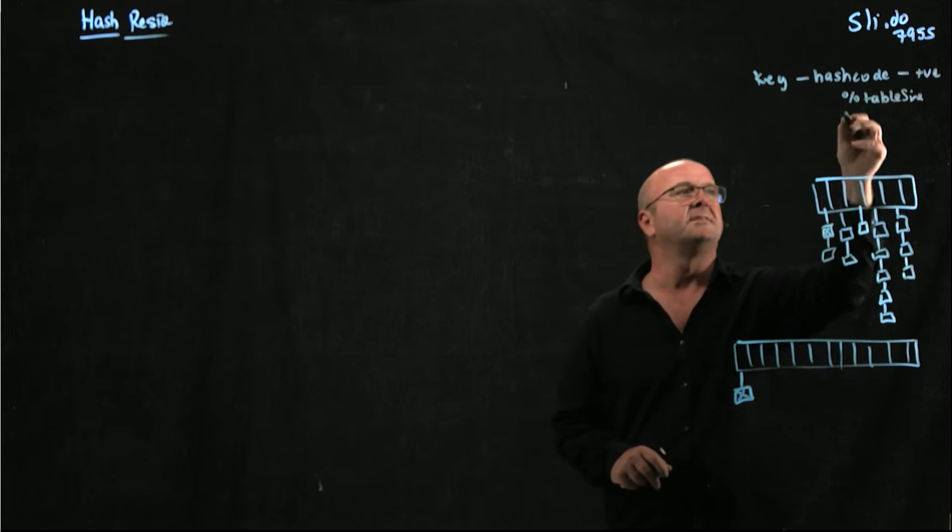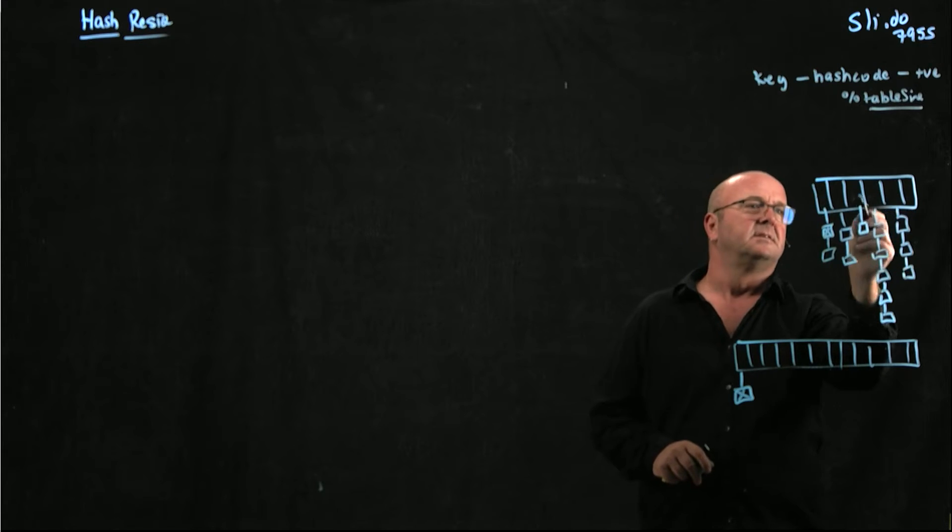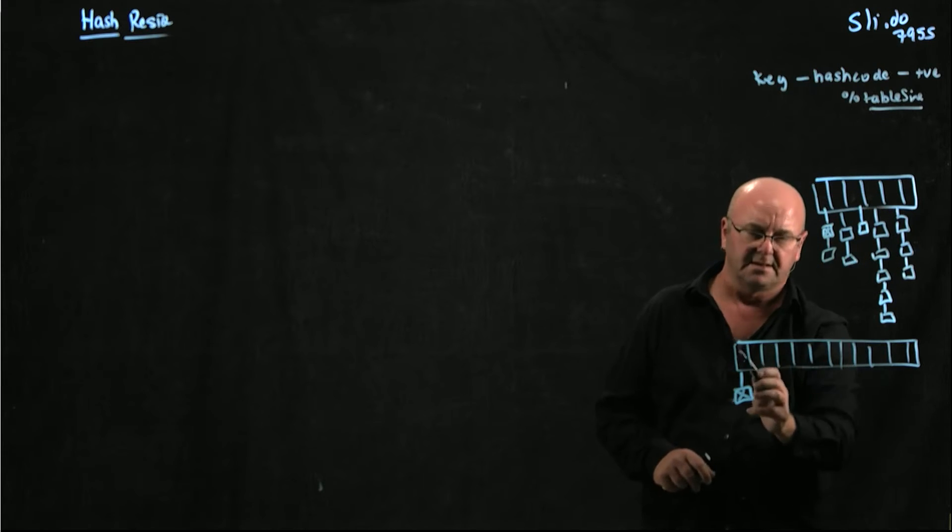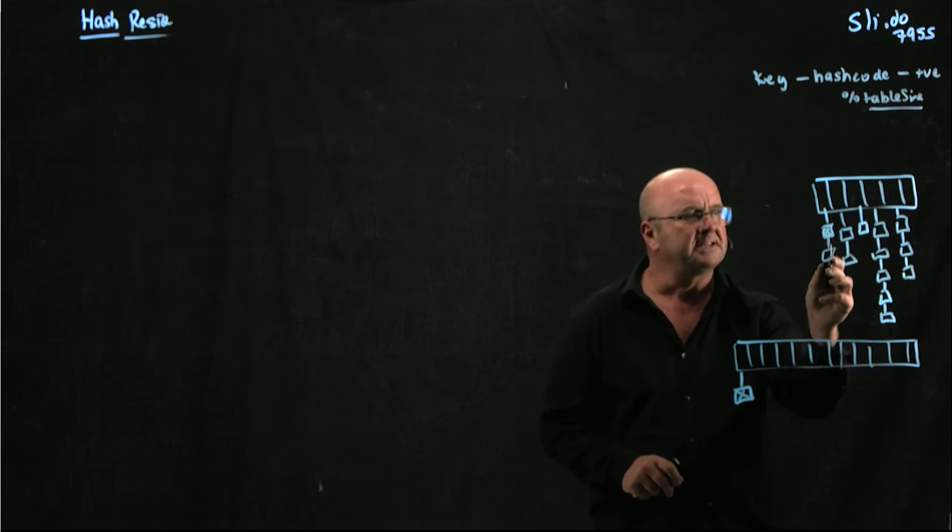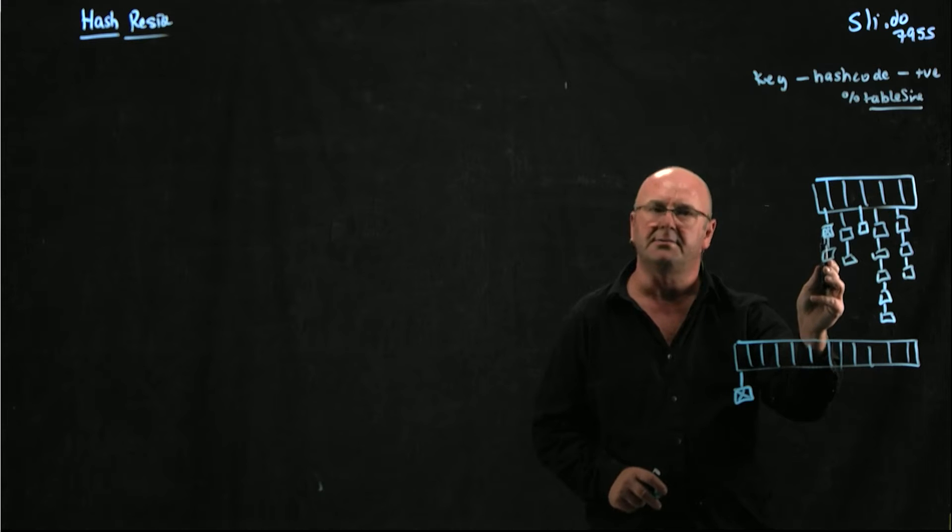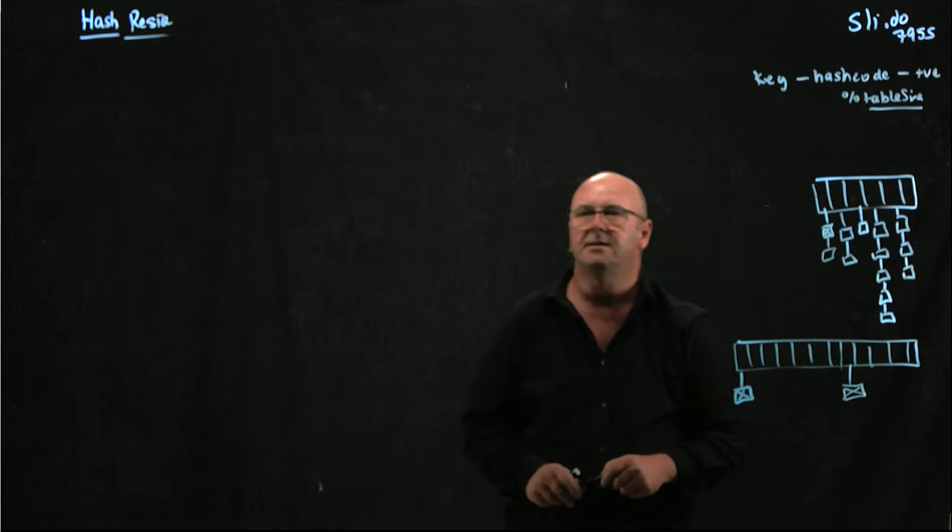Because we're modding it on the table size, this table size only has five buckets in it, this table size has a lot more buckets in it. So that element may start off in position zero in the old hash, but it may end up over here in the new hash.